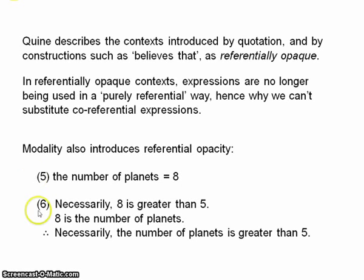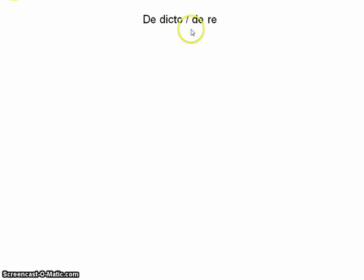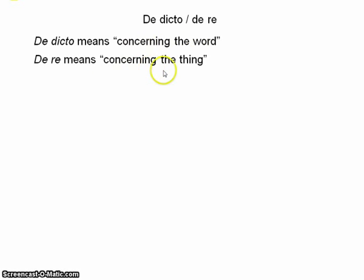But before ending this video, I want to consider one move you might make in response. You might simply bite the bullet and say the conclusion is true — the number of planets is greater than 5; after all, there are 8 planets and 8 is greater than 5. On the other hand, it's also clearly unreasonable. The number of planets is necessarily greater than 5? That's ridiculous. What's going on here is we're trading between two different interpretations of the opaque context, and this draws on a very important distinction: the de dicto / de re distinction. You can take de dicto to mean 'concerning the word,' and de re to mean 'concerning the thing.'